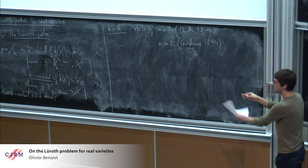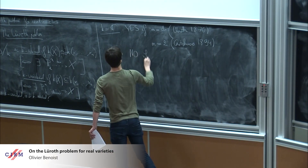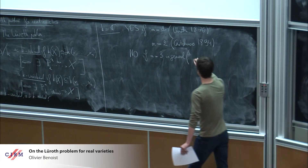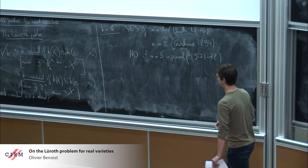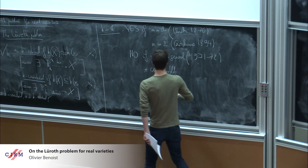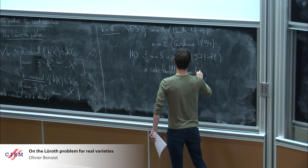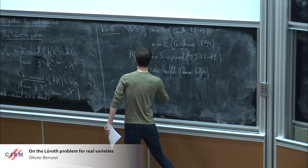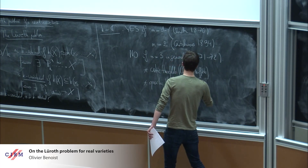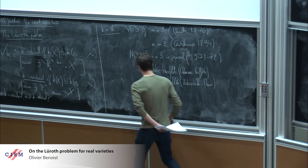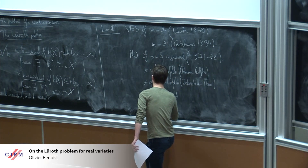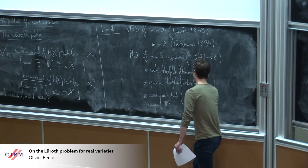From dimension 3 on, the answer to this problem is negative in general. Three different counterexamples were found almost at the same time, in 1971–72, by three different groups of authors. The first counterexample was the case of cubic threefolds, due to Clemens and Griffiths. Also the case of quartic threefolds, considered by Iskovskikh and Manin. And some quartic double covers of P³, which were counterexamples of Artin and Mumford.